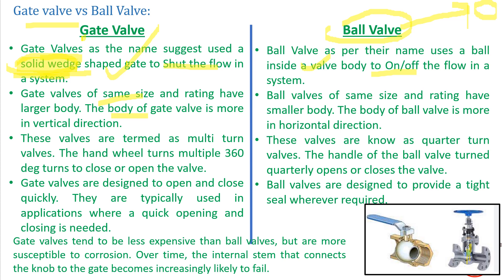For the same size and same rating, a gate valve has a larger body. The gate valve moves in a vertical direction — when the handwheel is rotated, the spindle moves up and down. Compared to a ball valve of the same size and rating, the gate valve will be larger, while the ball valve will be more compact. If the size of the ball valve increases, it increases in the horizontal direction, while the gate valve extends in the vertical direction. Gate valves are also termed multi-turn valves because the handwheel needs to be rotated multiple times to move the wedge-shaped spindle.